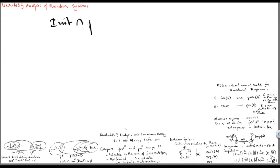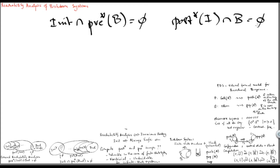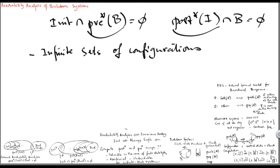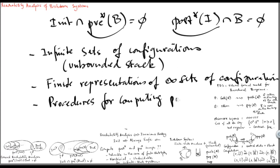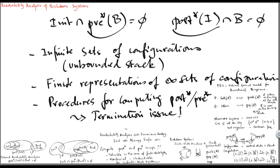Coming back to our problem, which can be solved in a backward or forward manner, the main challenge is to construct the sets pre-star and post-star of some sets of configurations. The main difficulty is that these sets can be infinite in general. As seen in the previous example, the size of the stack can be arbitrarily large and reach any natural number n. Therefore, we need finite representations of infinite sets of configurations, and we need procedures for computing both post-star and pre-star images that are terminating.